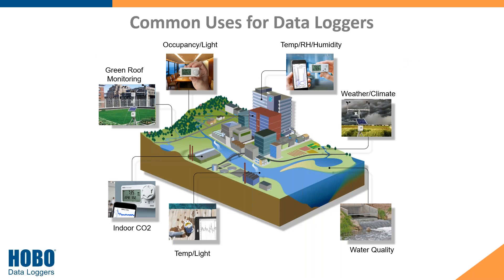Here are some common uses of data loggers in different environments. Starting clockwise from the top left: you could have a remote monitoring system or standalone weather station on a green roof to record environmental data. Next, our occupancy/light data loggers are useful if you have automated light switches in conference rooms and want to ensure they're turning on and off as scheduled — detecting when someone enters, lights come on, and after they leave with no motion for a few minutes, lights automatically shut off.